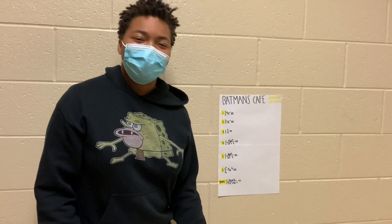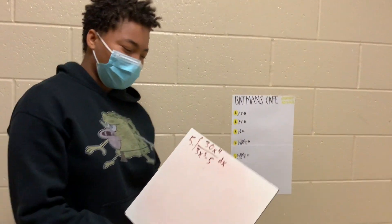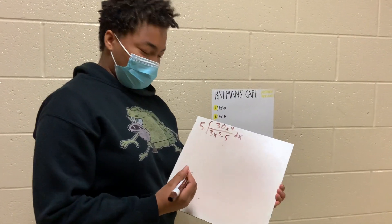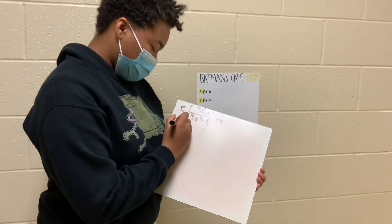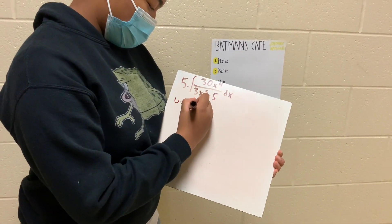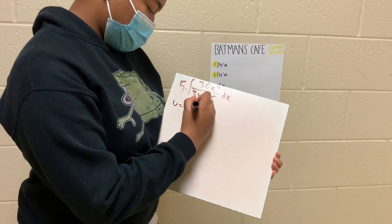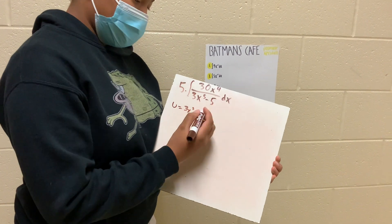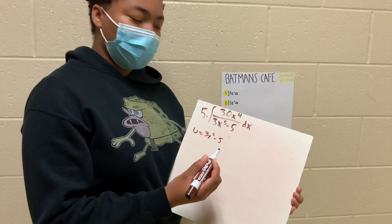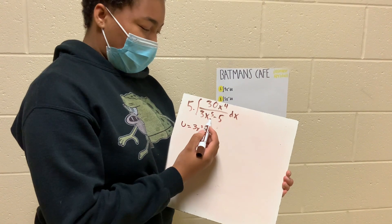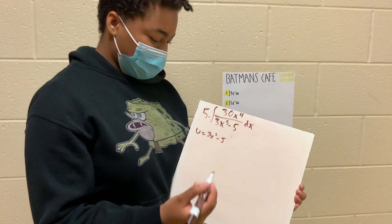Hi, can I get a number 5 please? Of course, let me show you exactly how to do it. So just like all the other ones, we're going to be using the u-sub method. For this problem, our u is going to be equal to 3x to the fifth minus 5. We're choosing this denominator over the numerator because the 5 is higher than 4 and it is of a higher power.